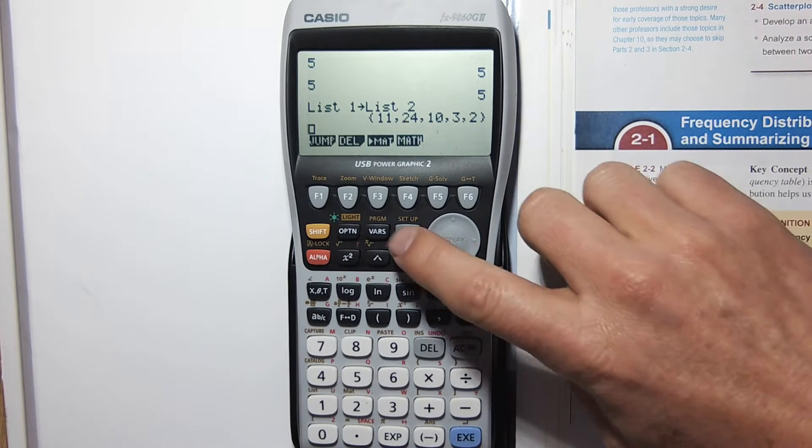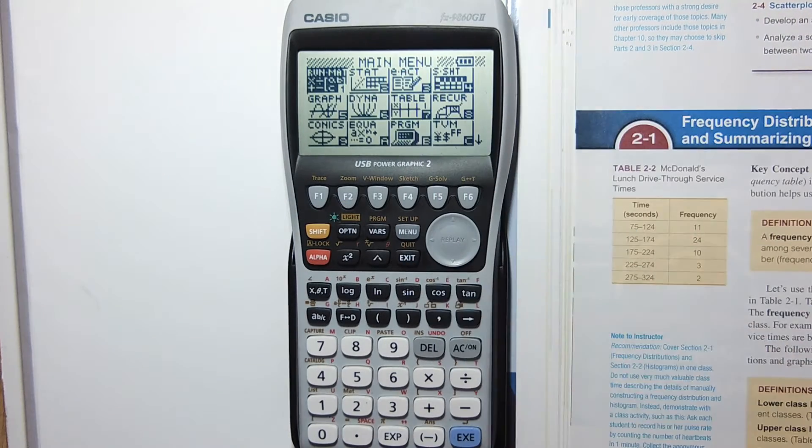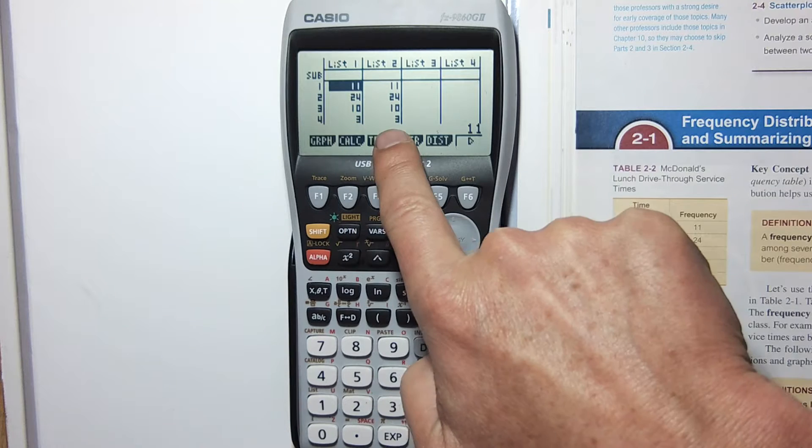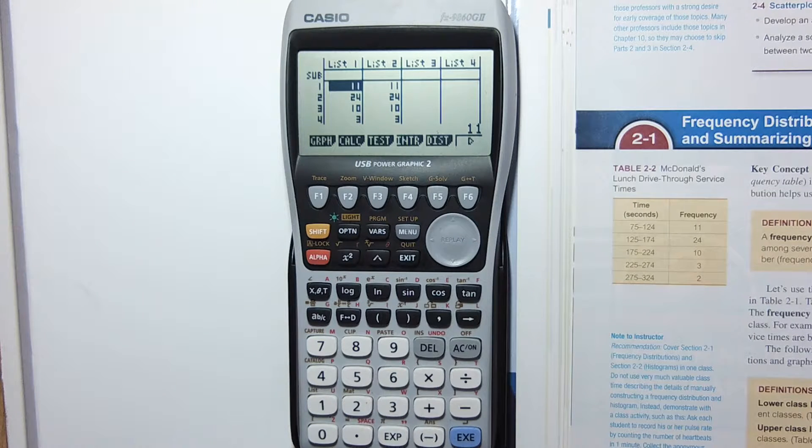I'm going to double check that by going into the stat menu. You can see list 1 has been exactly stored into list 2. It's exactly duplicating.